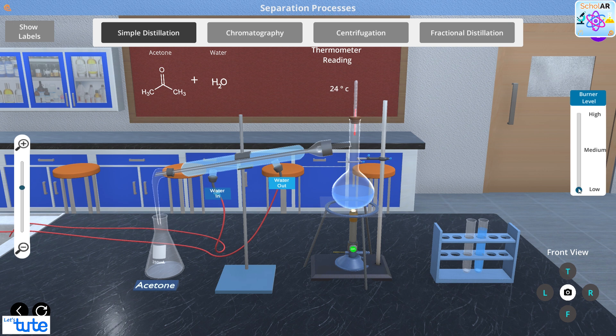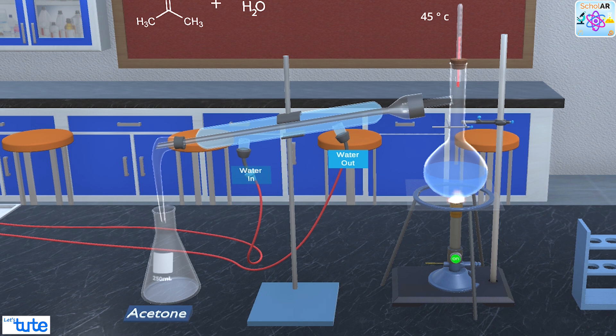We can set the heat to high. When the solution starts heating, we can see the vapors start coming at 58 degrees. This is the boiling point of acetone, and we can see the vapors of acetone getting formed.